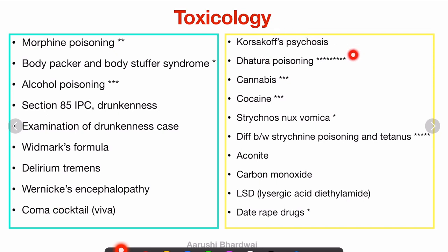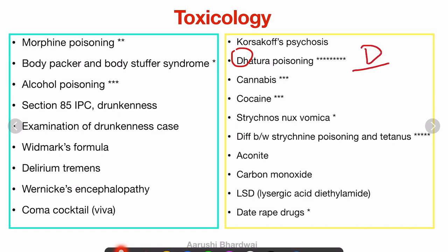Wernicke's encephalopathy is a read-through topic. Coma cocktail is a viva question. Korsakoff's psychosis is not much asked but is a read-through topic. Datura poisoning is a topic that will be asked — it is very, very important, and there is a very good mnemonic: every sign and symptom in datura poisoning starts with the letter D.